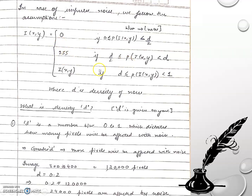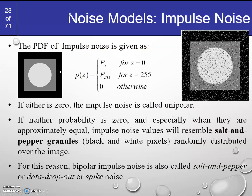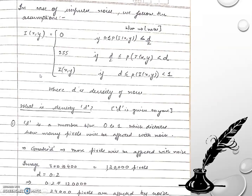If the probability lies between d and 1, the intensity value remains unaffected — it stays the same as the original I(x, y). This is a small region in the expression, but those pixels remain exactly as they were in the original image.